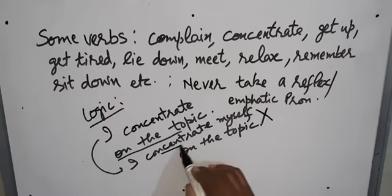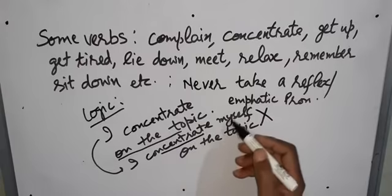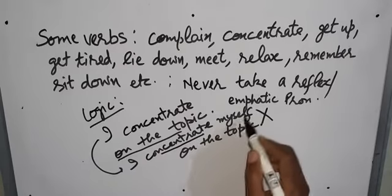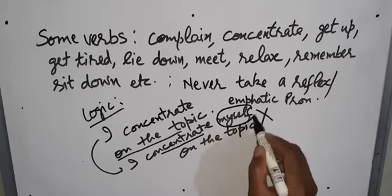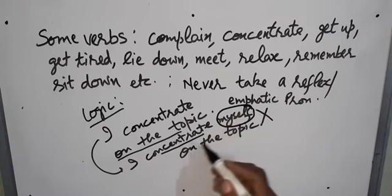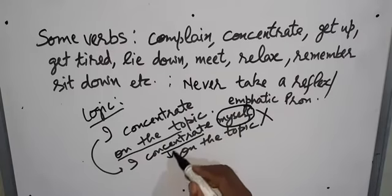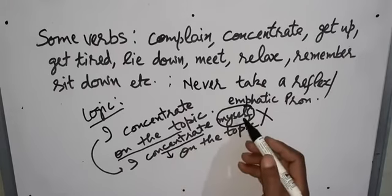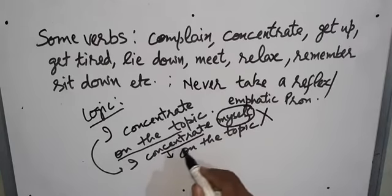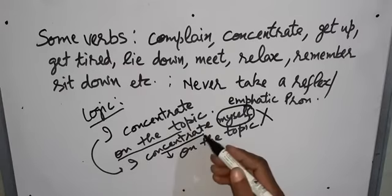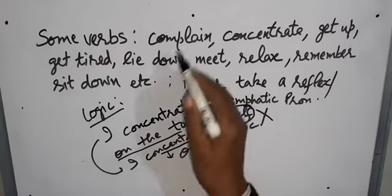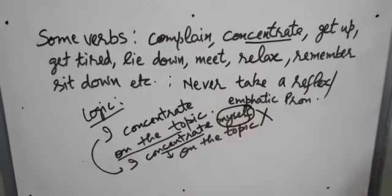This sentence — 'I concentrate myself on the topic' — is unacceptable. Because concentrate is a process that is already understood to involve yourself. When you concentrate on the topic, the meaning of 'myself' is already understood, so it is a repetition. Therefore, this is a wrong sentence. We can simply say: 'We can concentrate on the topic.'